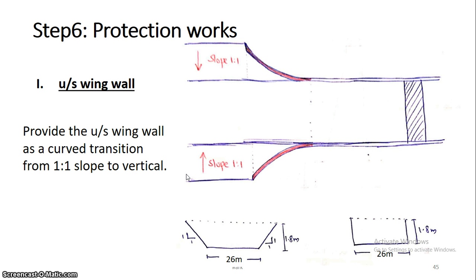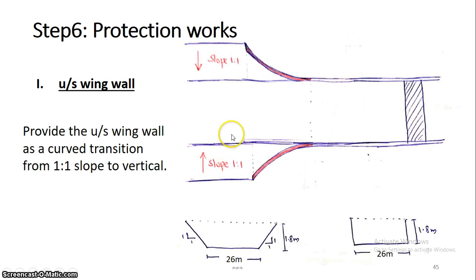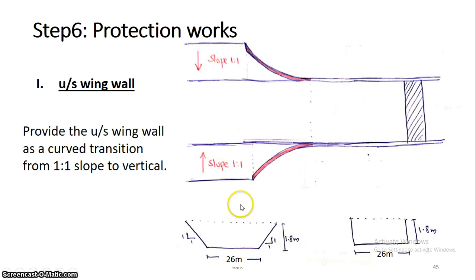Let's go to the upstream wing wall. The actual section of the channel is a trapezoidal section with a 26-meter bed width and a 1-in-1 side slope. This is the actual channel section.